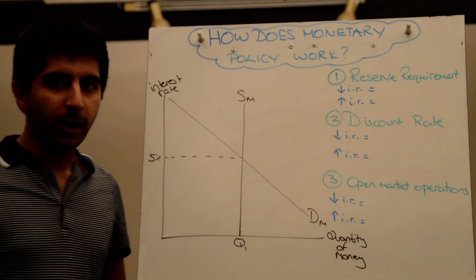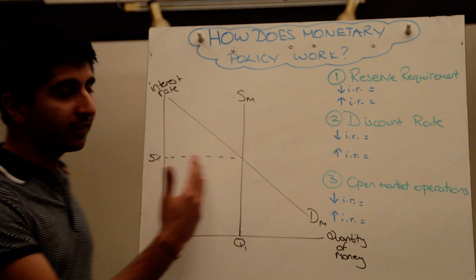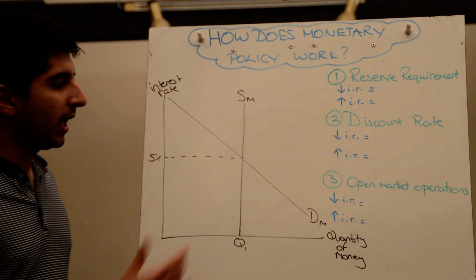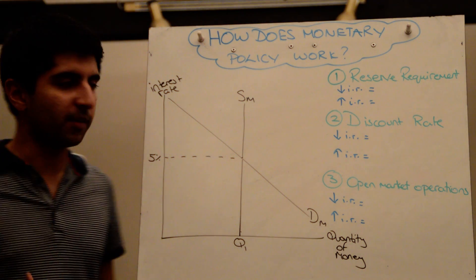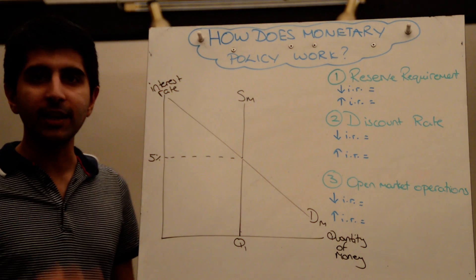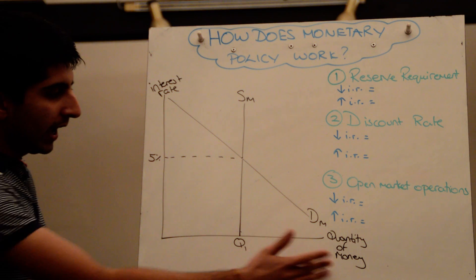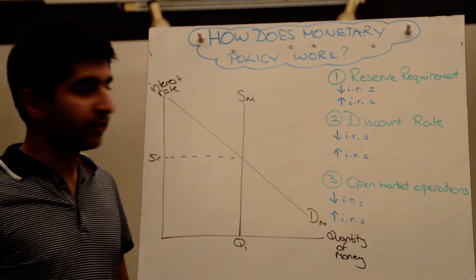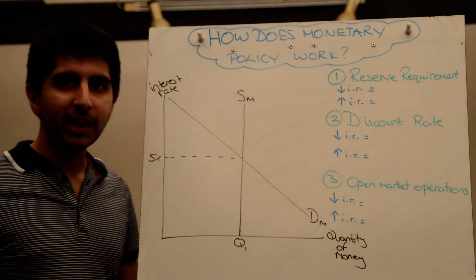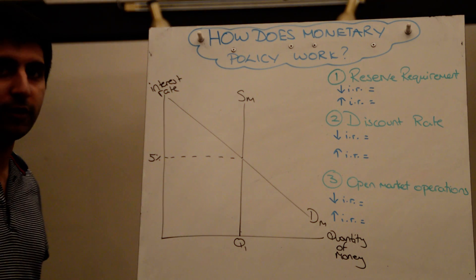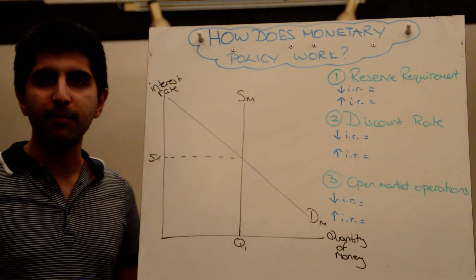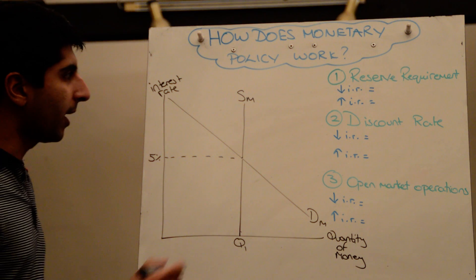Here is a basic money market where we have a fixed supply of money that the Bank of England controls, and you have a regular demand for money downward sloping. The price of money is the interest rate and on the x-axis we have the quantity of money. So very simply, if the Bank of England wants to increase or decrease interest rates it needs to manipulate the supply of money out there in the money market.